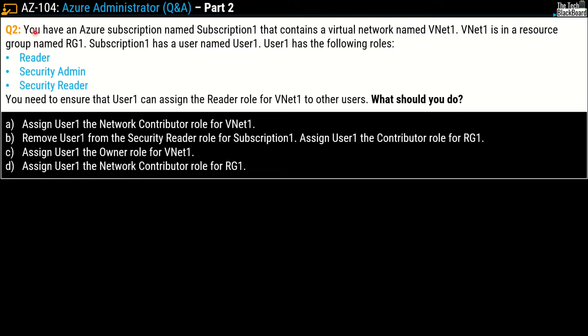Let's move on to question number two. You have an Azure subscription named Subscription 1 that contains a virtual network named VNet1. VNet1 is in the resource group called RG1.